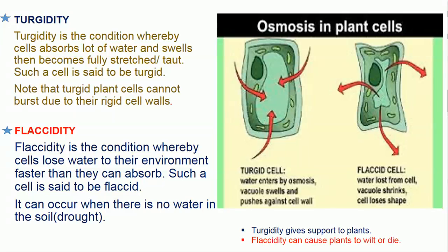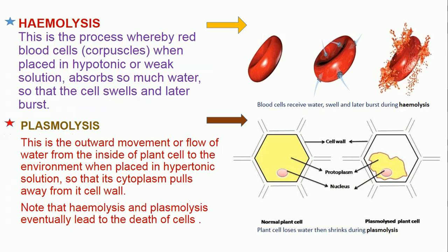Flaccidity: this is the condition whereby cells lose water to the environment faster than they can absorb. Such a cell is said to be flaccid, and it can occur when there is no water in the soil. A flaccid cell is placed in a hypertonic solution, meaning the inside of the cell is hypotonic, so water moves out of the cell into the surrounding environment, causing the cell to lose its shape or shrink. Turgidity gives support to plants, while flaccidity can cause plants to wilt or die.